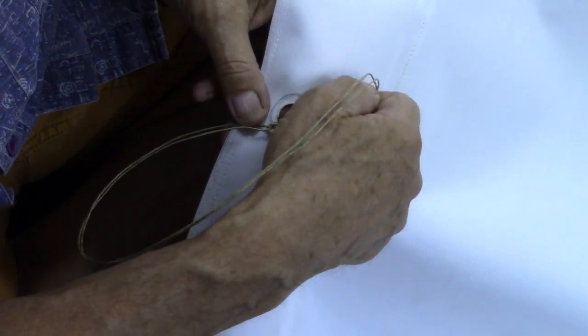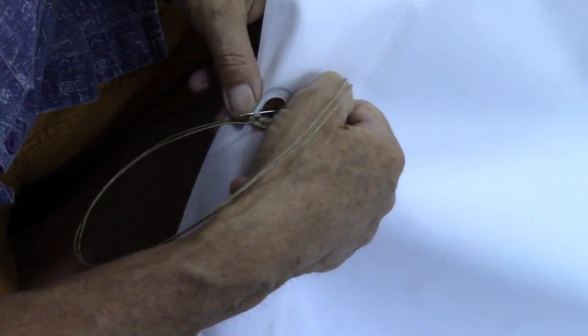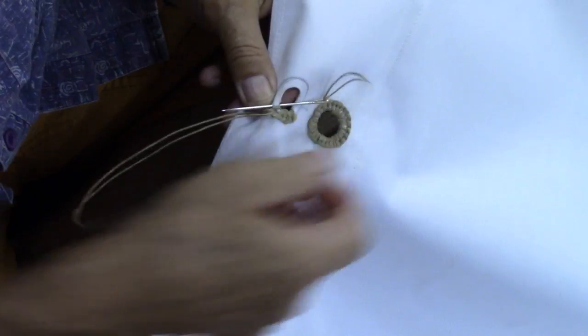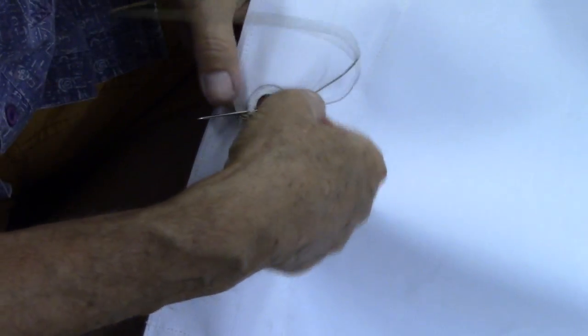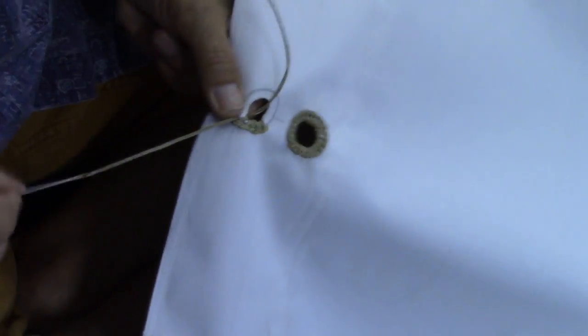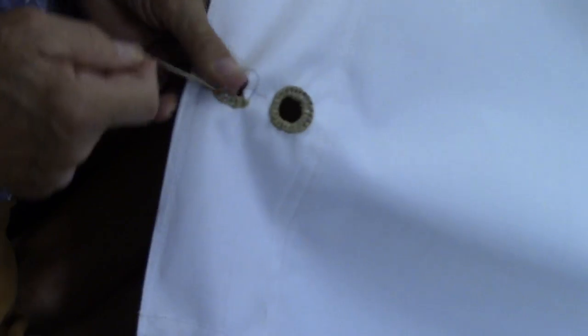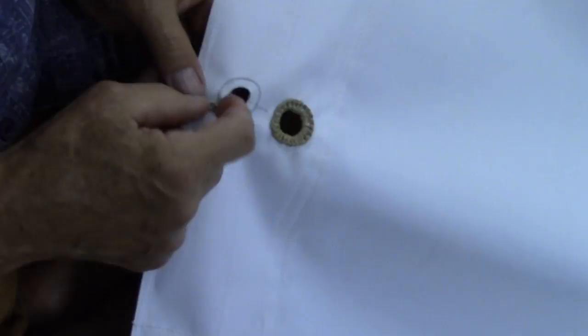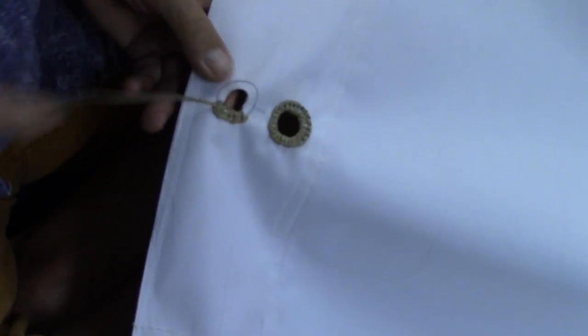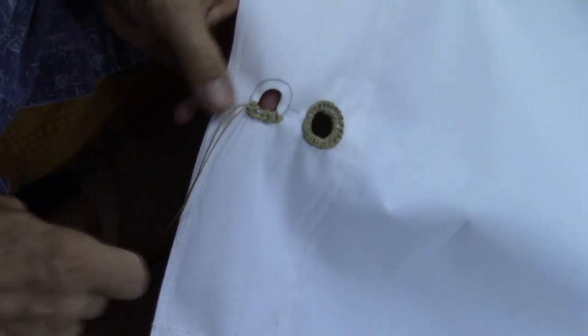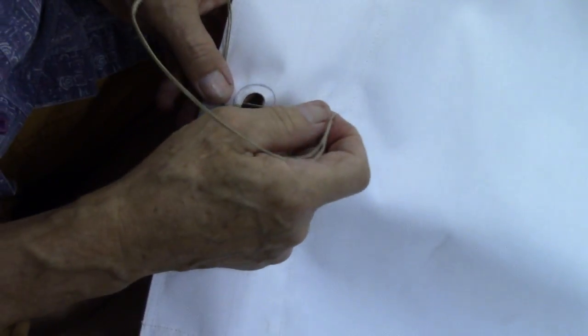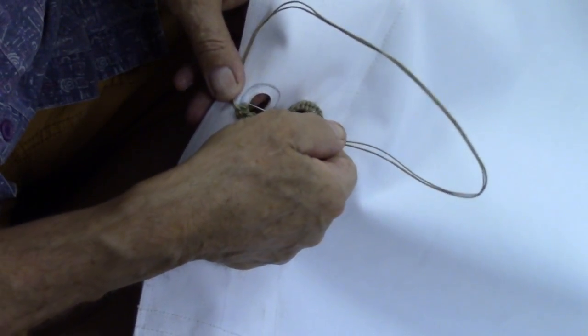Now, if this were a smaller hole, I wouldn't punch a hole. I would just use a tapered awl, push in through the material. Then you just make a stitch, where you would bunch it up and it would open the hole up. And then you would go around with this button stitch, it's what it's called.